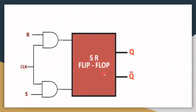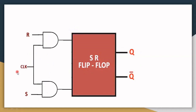In the Clocked SR Flip-Flop, we have an SR flip-flop and we are connecting two AND gates to its input side, along with a clock pulse. The input of the first AND gate is R and the input of the second AND gate is S. The other two inputs are connected to the clock. Depending upon the status of the clock, we get outputs at Q and Q dash. For positive triggering, the clock should be high to get a change in the output.